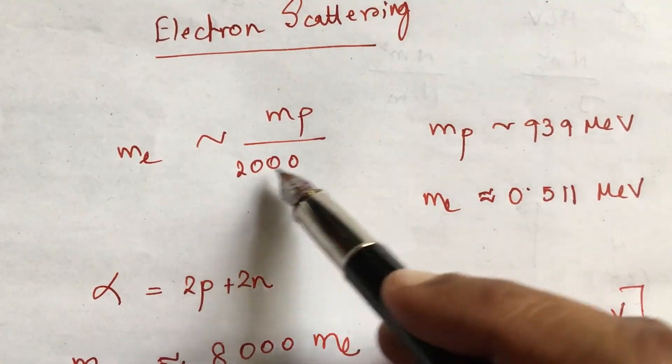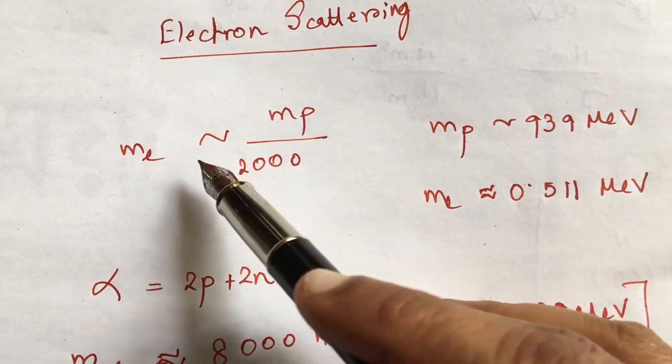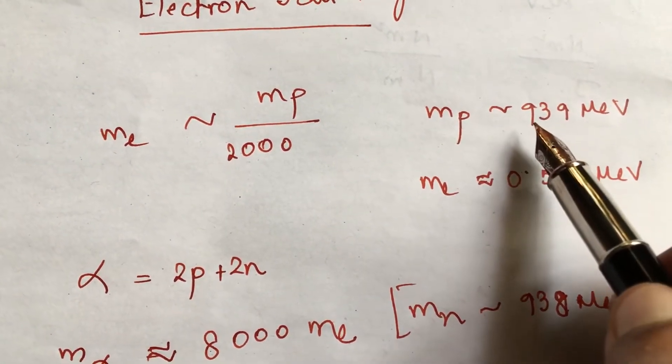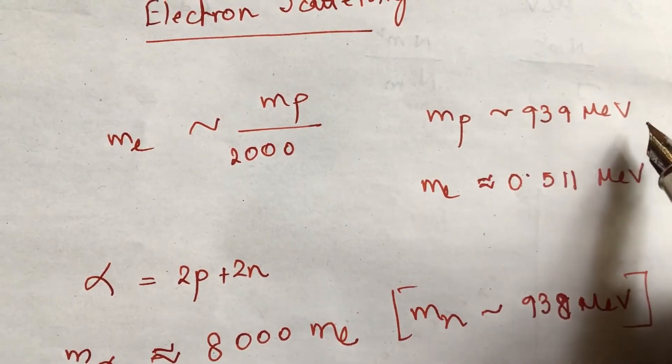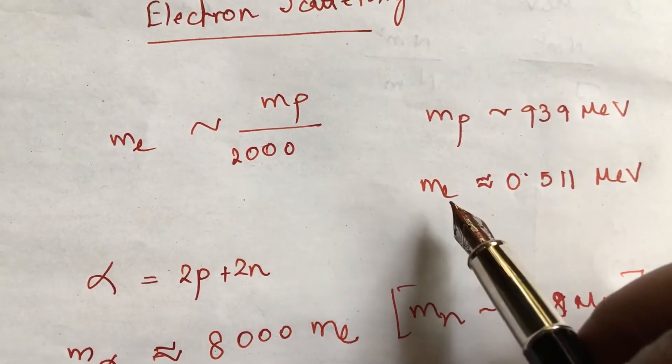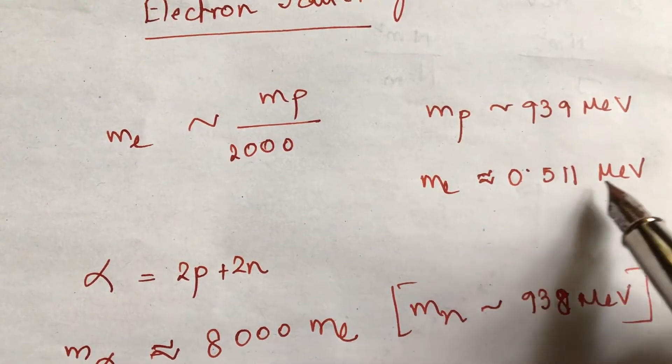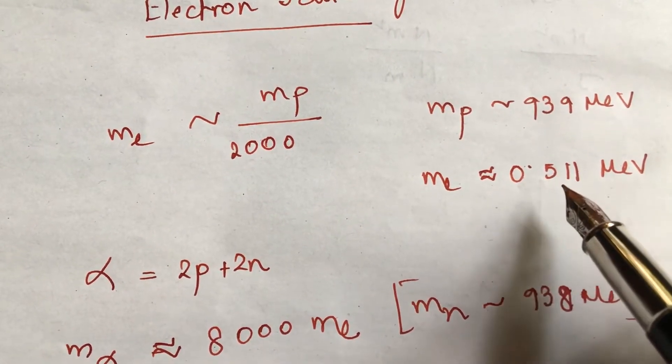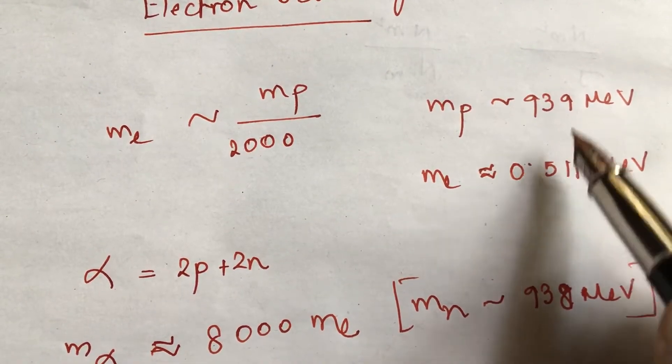Electrons are two thousand times lighter than protons. A proton has mass almost thousand million electron volts, electron has mass 0.5 million electron volts. So if we multiply this with two thousand, we will get one thousand.